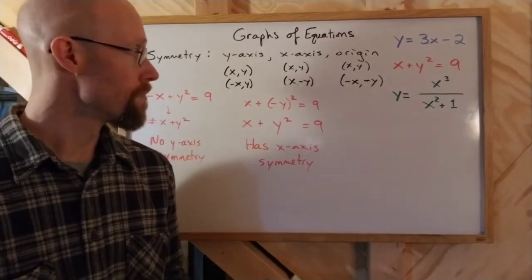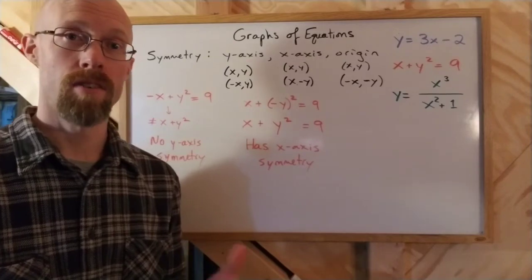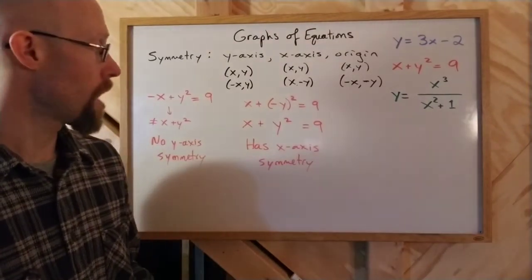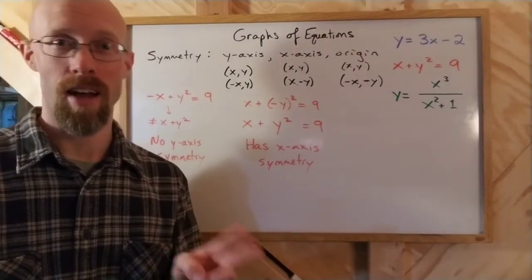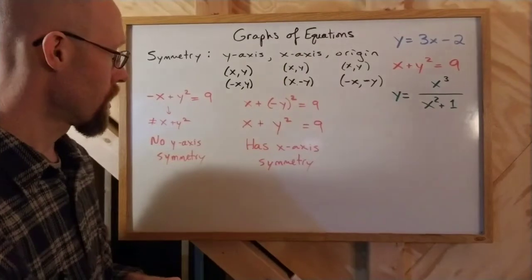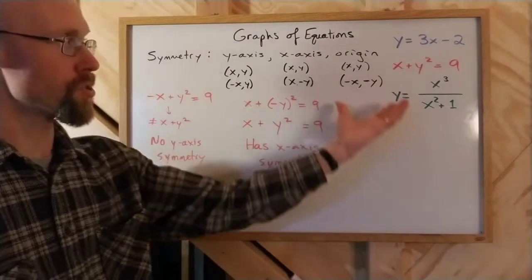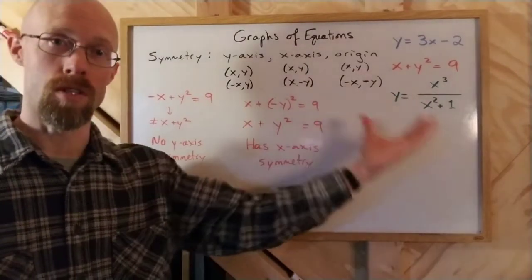Now, it is possible to have more than one type of symmetry. You could actually have all of these at the same time, in fact. However, it is not possible to have two of them and not the third. So in other words, we can tell right away that there's no way to get origin symmetry if we don't. We'd have to have both of these, basically, to have origin symmetry.